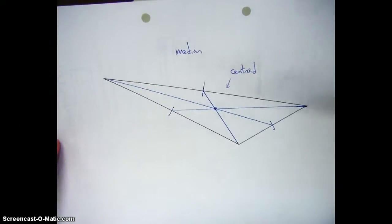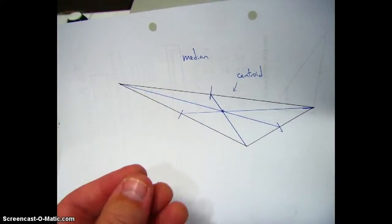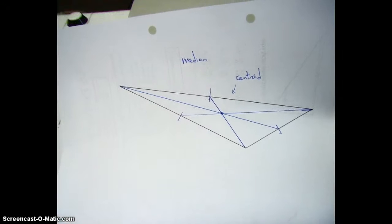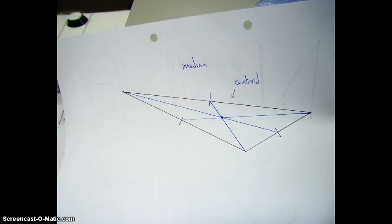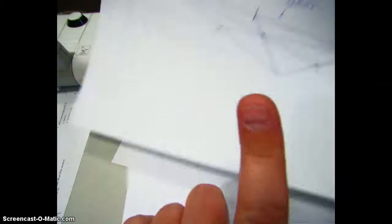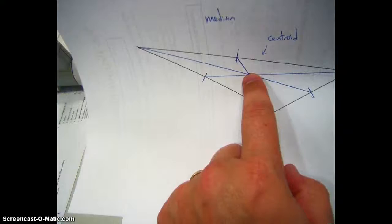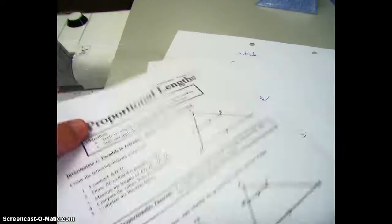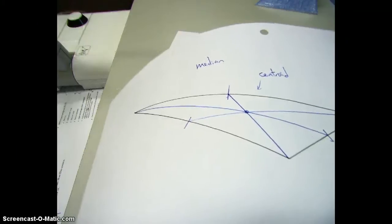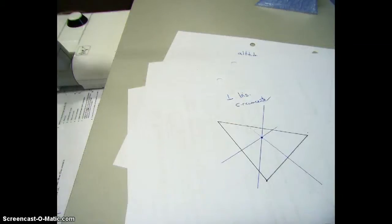This centroid has the property that if you had this triangle cut out of some uniformly thick material, like sheet metal or cardboard or something, and you wanted to balance it on your finger, what you would do is you'd put your finger right on that centroid and balance it. You'd balance it right underneath that centroid, and the thing would balance. That's what the centroid is for.